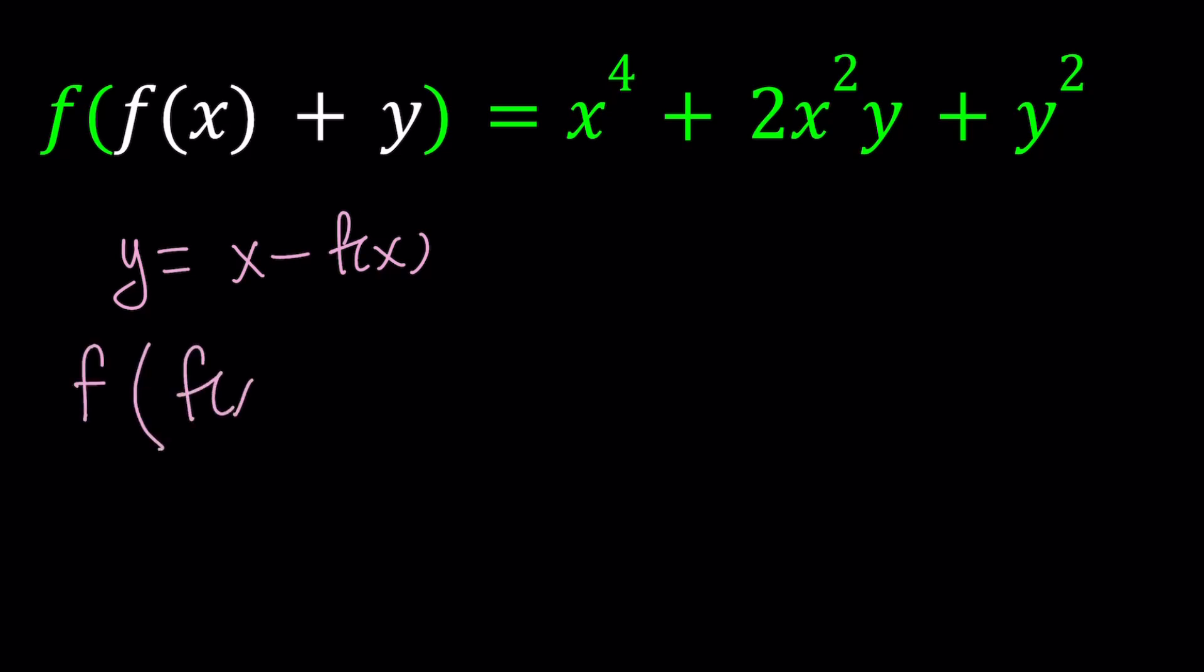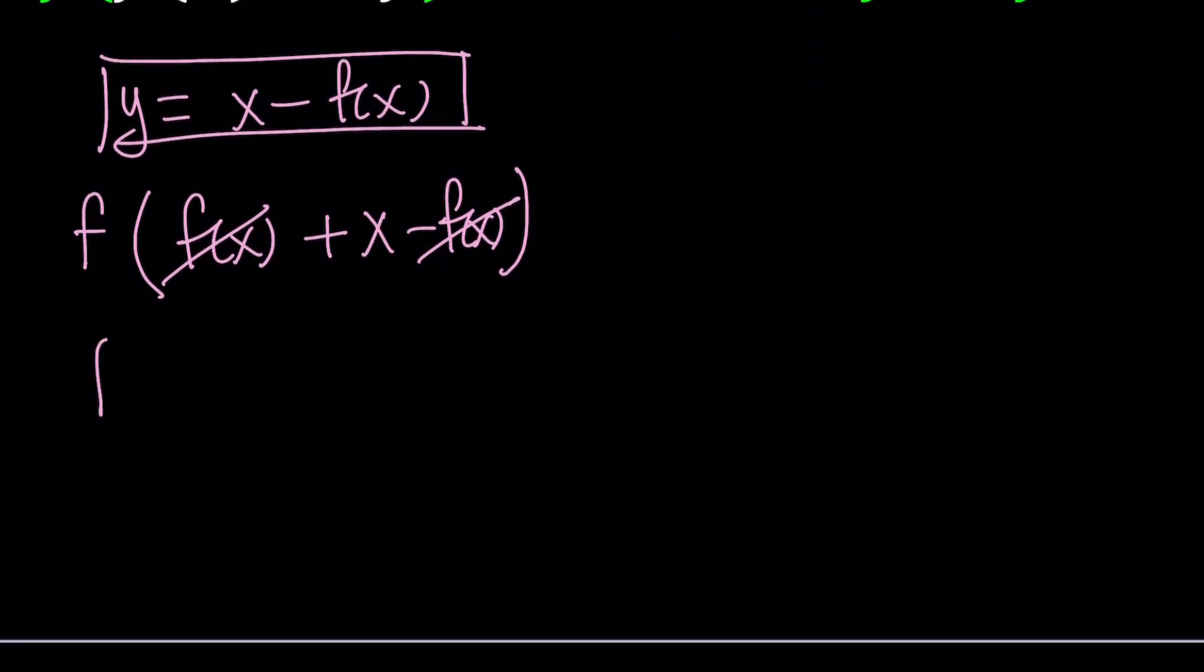f of x. Replacing y with x minus f of x means I'm not replacing x with anything. x is going to stay as x, so y will be x minus f of x. Alright, great. Now these two cancel out and that gives us f of x on the left. That was my goal.